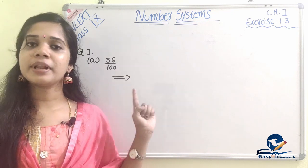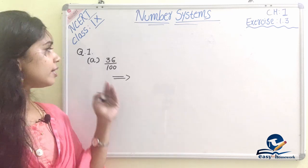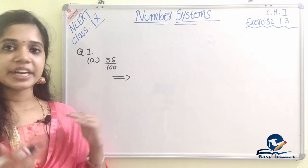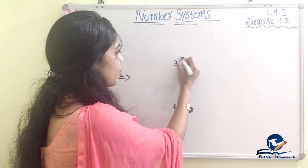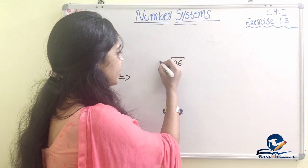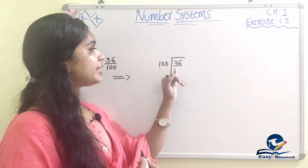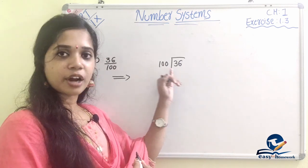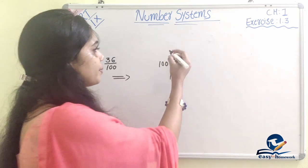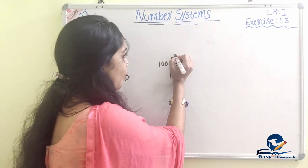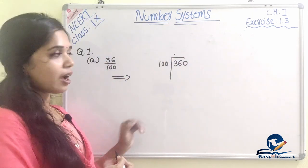We will start with decimal expansion and decimal form. Let's check. We will start with the usual division. What do we do? 36 divided by 100. If we have 100, it is 36. So we will put the decimal point. The zero point gives us 360.